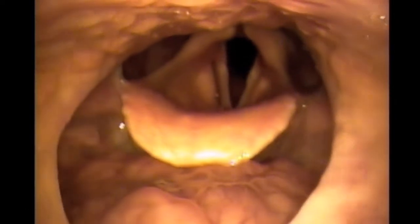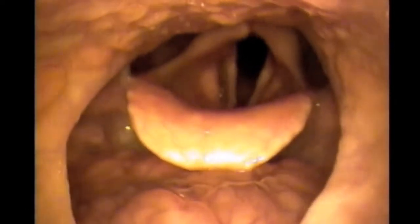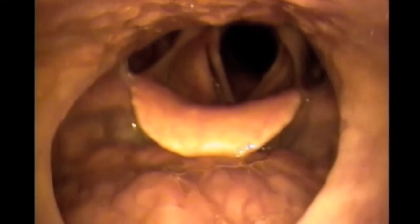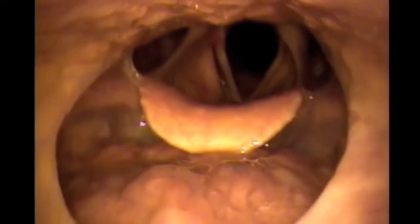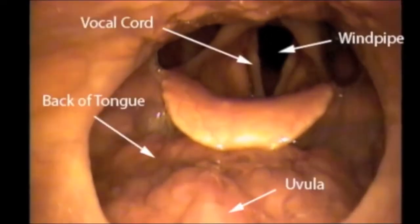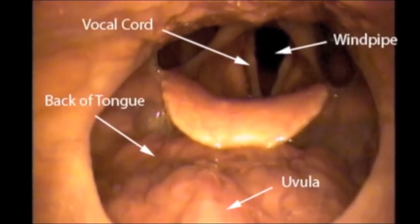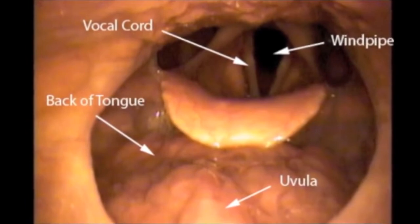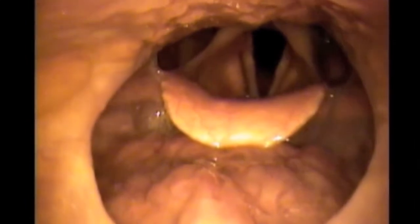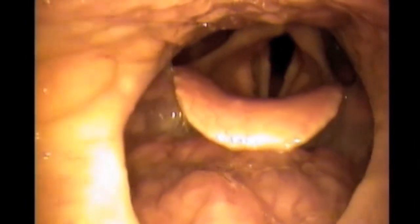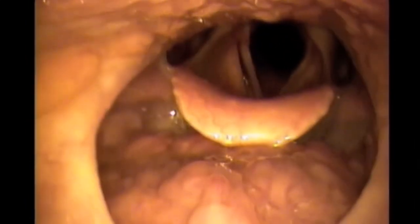Shown here is what the upper airway looks like in a normal sleeping individual who is not snoring. The airway is completely open without any areas of obstruction or vibration.